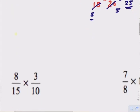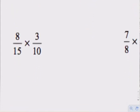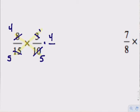Let's look at another example: 8/15 times 3/10. Look along the diagonals — 8 and 10 have a common factor of 2. Divide: 8 divided by 2 is 4, 10 divided by 2 is 5. Then the other diagonal: 3 and 15 have a common factor of 3. Divide: 3 divided by 3 is 1, 15 divided by 3 is 5. Now multiply: numerator 4 times 1 is 4, denominator 5 times 5 is 25 — so 4/25.